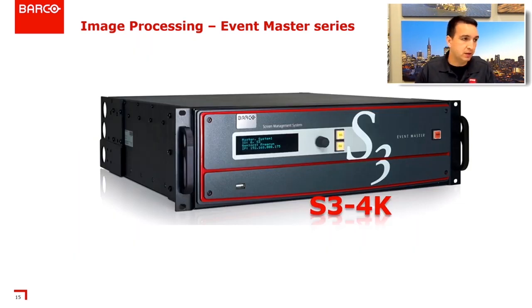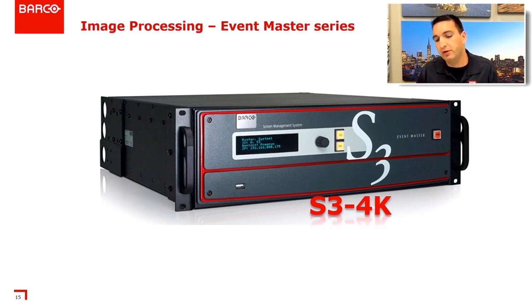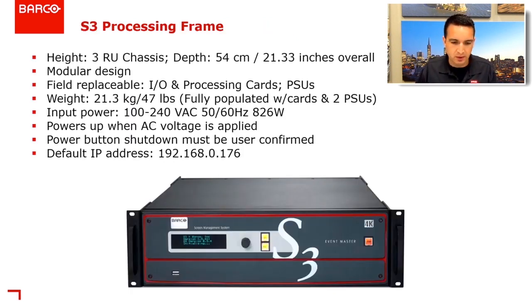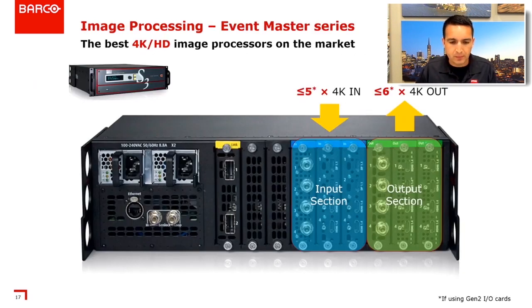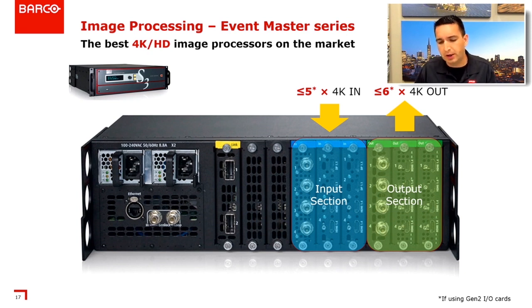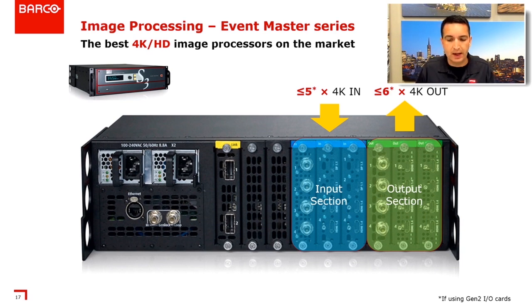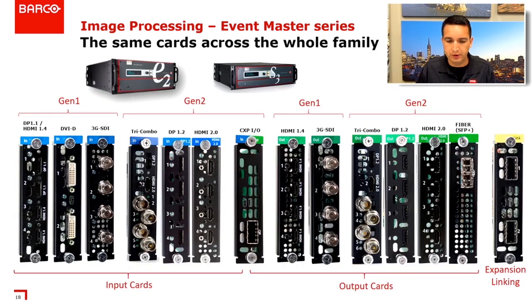The S3 is essentially the same box with less capacity, which is not necessarily a bad thing. Referring to the data sheet: the S3 4K can take up to 5 4K inputs and output up to 6 4K out.